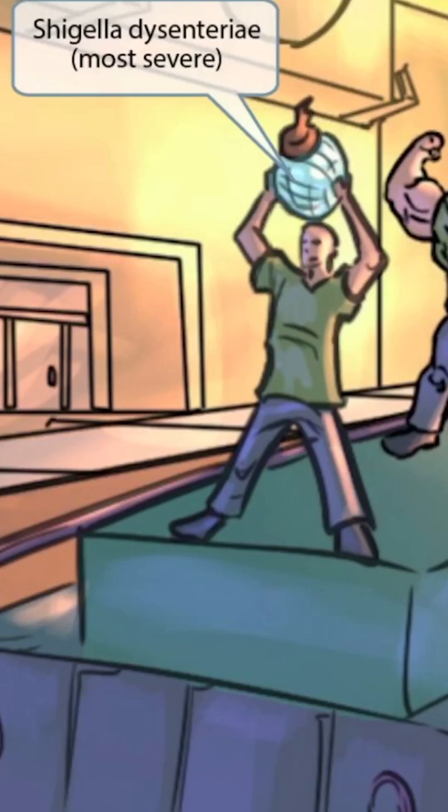First, notice that the guy towards the front is holding up a disco ball with some poop on it. The poop, or shit, represents shigella, and the disco ball sounds like dysenteriae. So together, this guy with the poop on the disco ball should help you remember shigella dysenteriae. Again, because he's closest to the view, this species is the most severe of the four species.